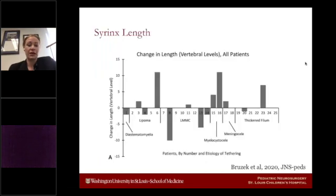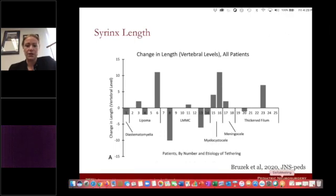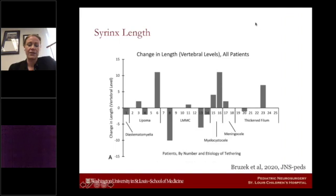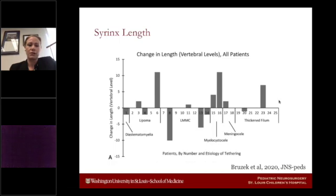Here is a breakdown of change in syrinx length pre-op and post-op at an average eight-year follow-up, for varying pathologies including diastematomyelia, lipoma, lipomyelomeningocele, myelocystocele, meningocele, and thickened or fatty filum. A bar upward indicates an increase in syrinx length; a bar downward indicates a decrease; no bar means no change. The response was variable — there was not a consistent response in syrinx size after cord untethering.